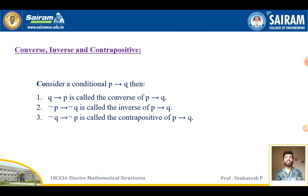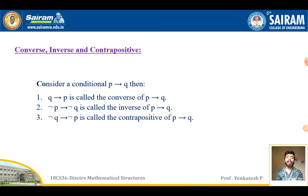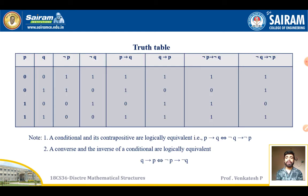Next, converse, inverse, and contrapositive. Consider a conditional 'if P then Q'. The converse is 'if Q then P'. The inverse is 'if negation of P then negation of Q'. The contrapositive is 'if negation of Q then negation of P'.